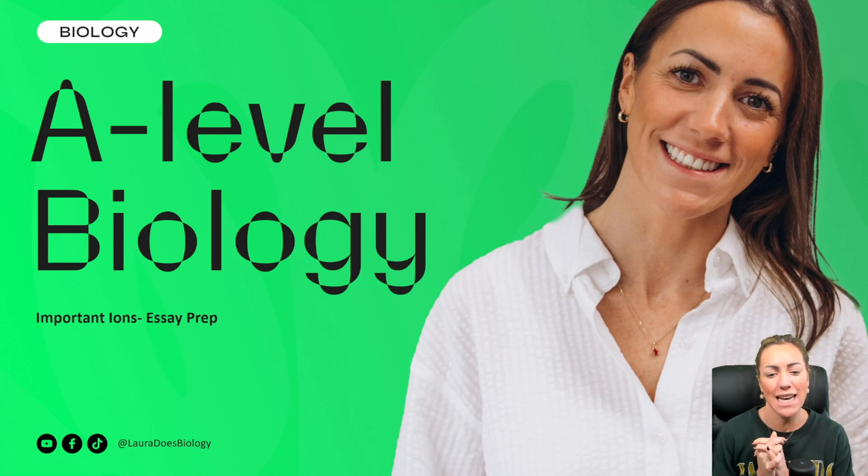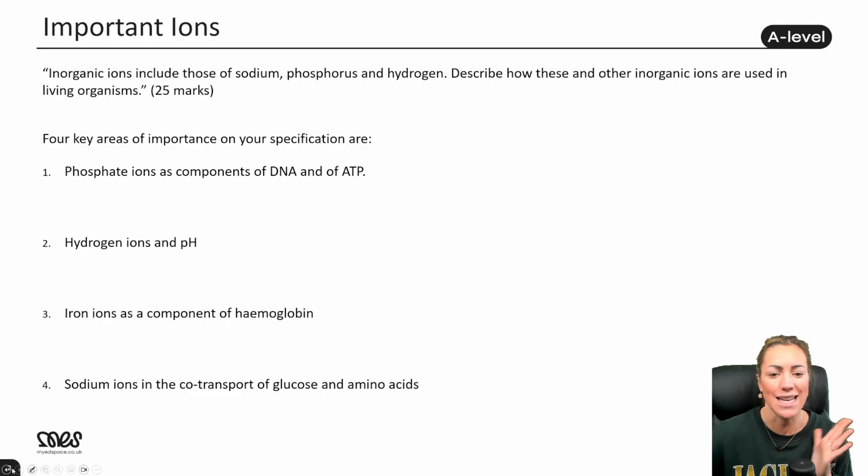In our video today we're going to be thinking about important ions in biology and we're going to be using that to try and plan an essay. I am going to put together at the end for you a potential paragraph that could go into an essay on important ions. So let's have a look at a potential essay question.